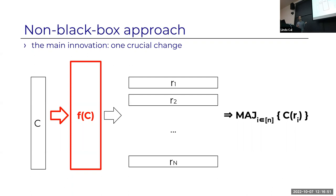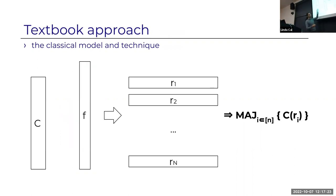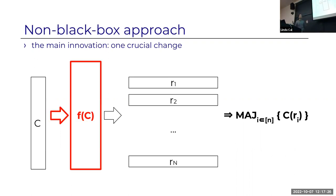The key point is that we're using information from the input circuit C to produce pseudorandomness that works only for this particular circuit C. I haven't said what properties this function has, because in every result it's different. Of course this transformation of C into the string will be efficient and deterministic—we want this algorithm to run efficiently.